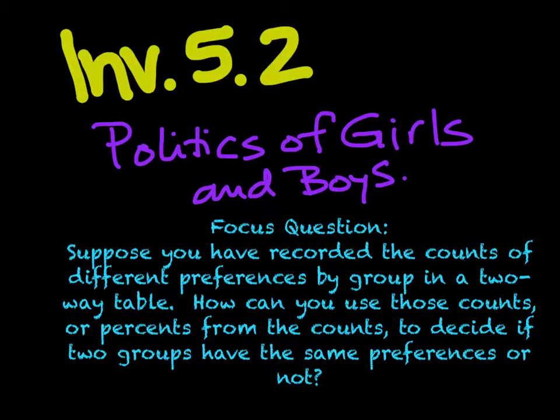Our focus question for this section is: suppose you have recorded the counts of different preferences by group in a two-way table. How can you use those counts or percents to decide if two groups have the same preferences or not?